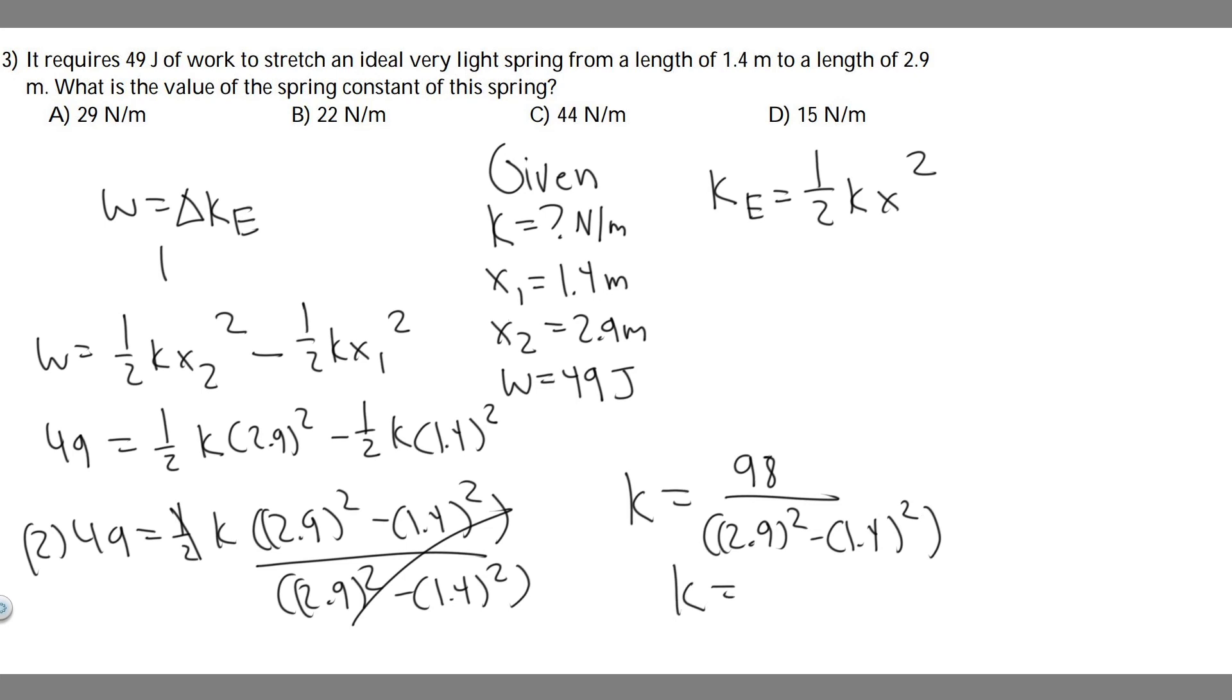So go ahead and plug this in. So 98 divided by 2.9 squared and then minus 1.4 squared.